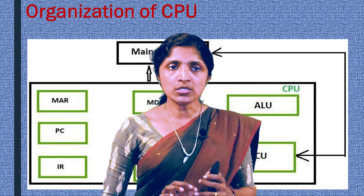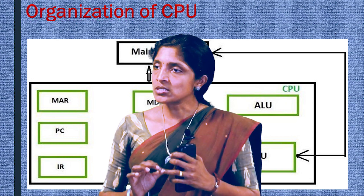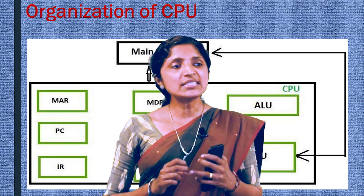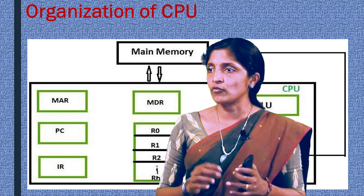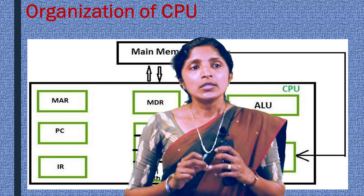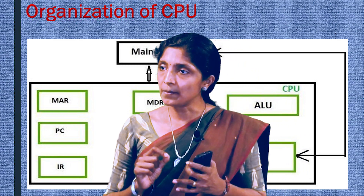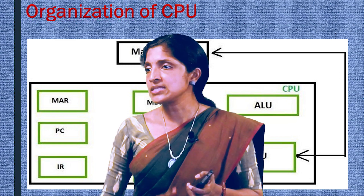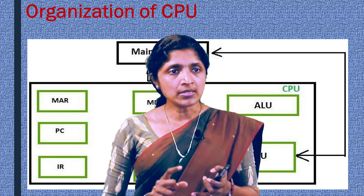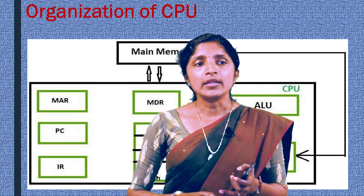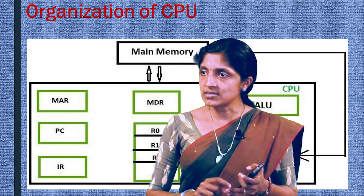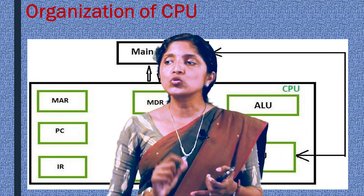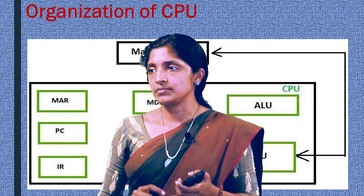In addition to these two units, the central processing unit contains several registers. These registers are used for fast access of information. There are some special purpose registers. One of them is program counter, or PC. The program counter contains the address of the next instruction. Another special purpose register is instruction register, or IR. IR is used to store the current instruction.